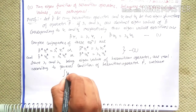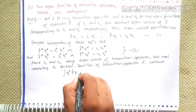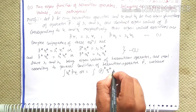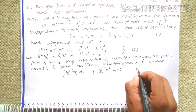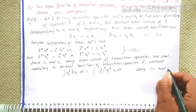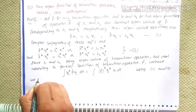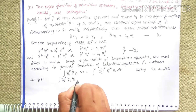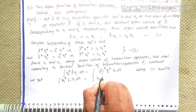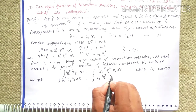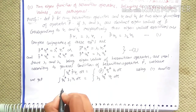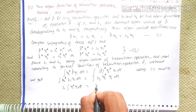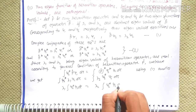According to the general condition of a Hermitian operator, we have: integration of chi-2* P-hat chi-1 d-tau equals integration of (P-hat* chi-2*) chi-1 d-tau. Using equations one and two, we get: integration of chi-2* lambda-1 chi-1 d-tau equals integration of lambda-2 chi-2* chi-1 d-tau. Therefore, lambda-1 times integration of chi-2* chi-1 d-tau equals lambda-2 times integration of chi-2* chi-1 d-tau.